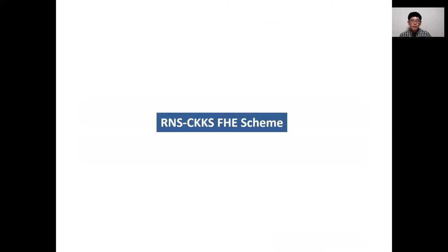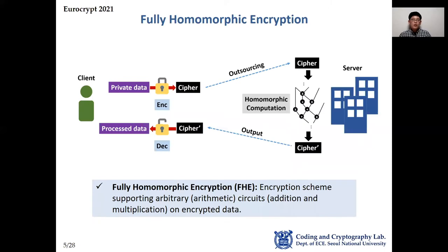Let me introduce the RNS-CKKS FHE scheme. Fully homomorphic encryption is an encryption scheme supporting arbitrary circuits or arithmetic circuits on encrypted data. With an FHE scheme, users having public keys can perform any operations on encrypted data, but cannot access any information about the data. So FHE enables clients to securely outsource arbitrary computation about their private data.